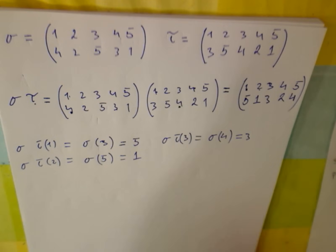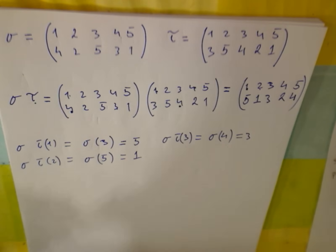We are multiplying right to left. We are multiplying right to left order. Some books do it the other way. But we are going to adopt this convention here.